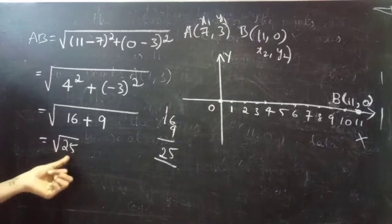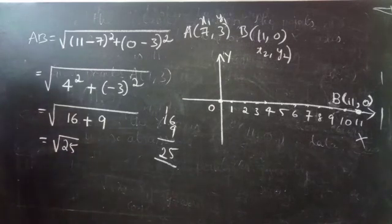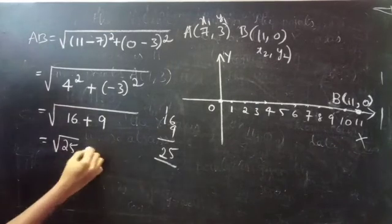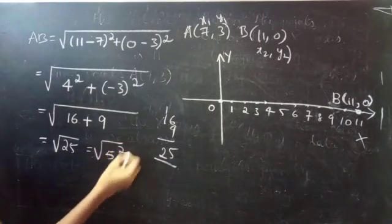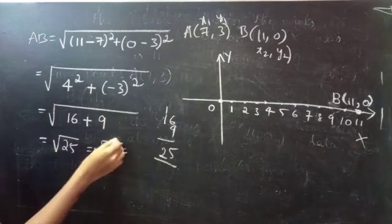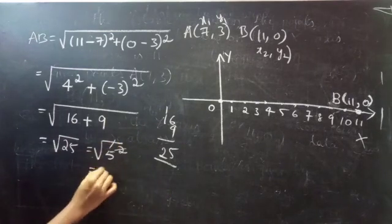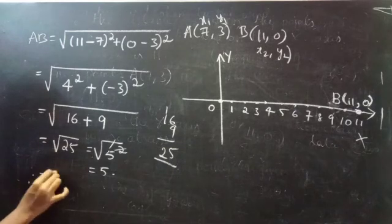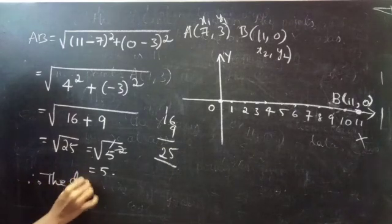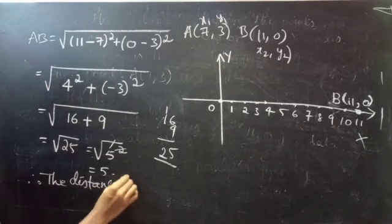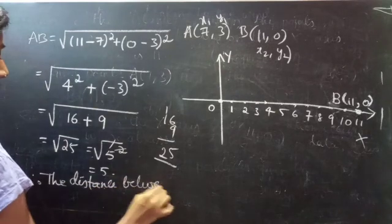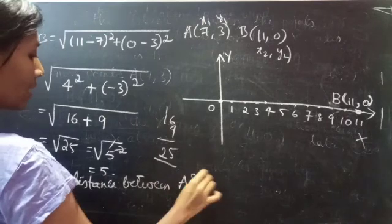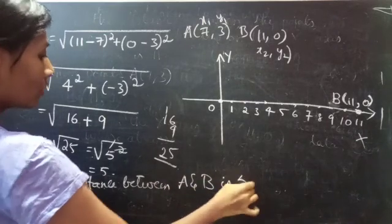So the distance between A and B is square root of 25. Square root of 25 can be written as square root of 5 square. Square and root gets cancelled. So this equals 5. Therefore, the distance between A and B is 5.